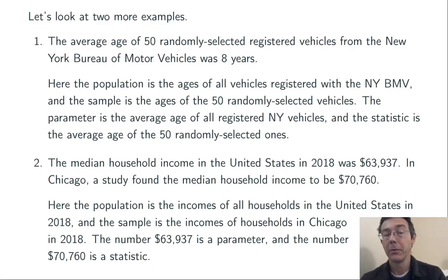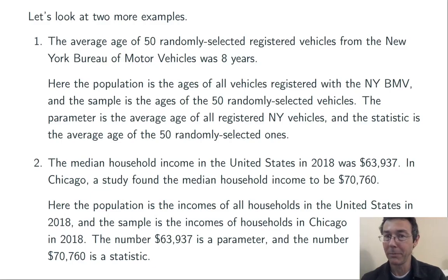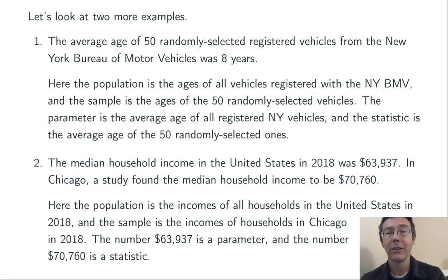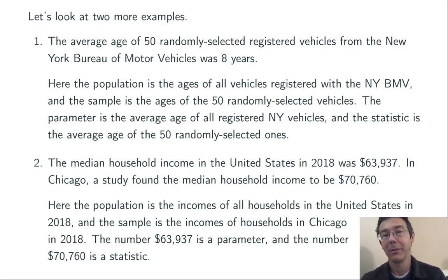The first number, $63,937, is a parameter — it describes the population. And the second number, $70,760, is a statistic, a number describing a sample.